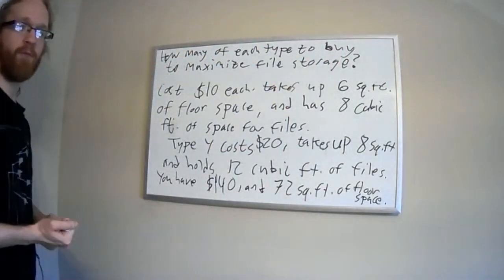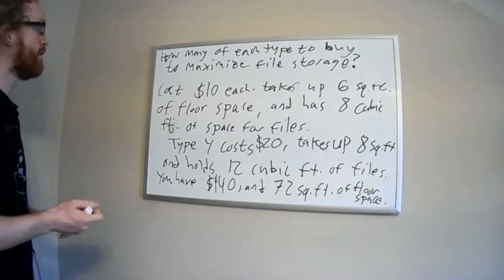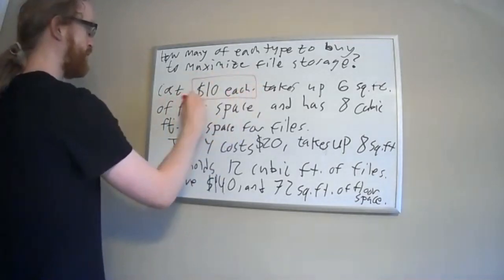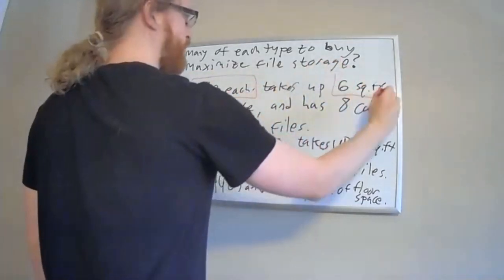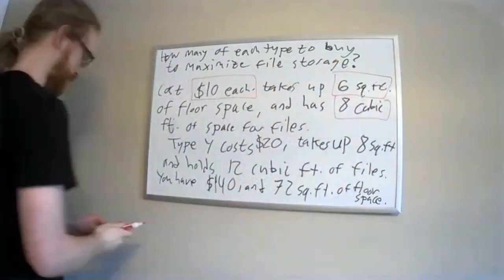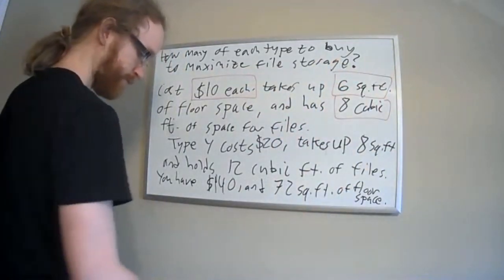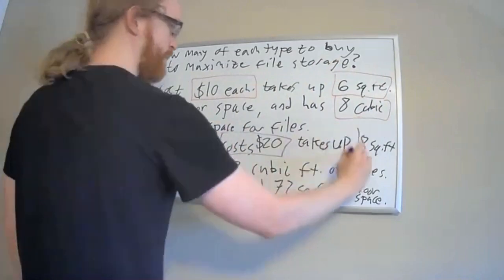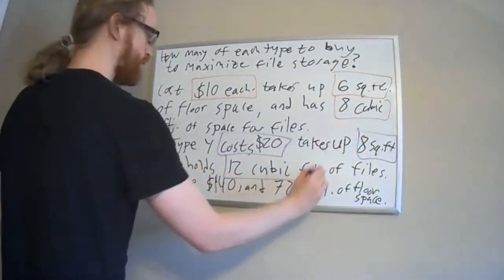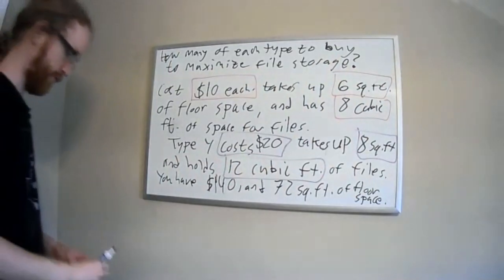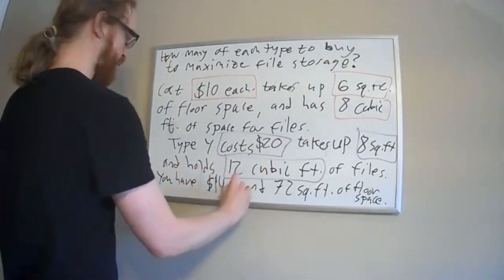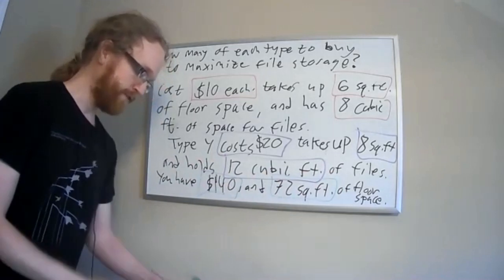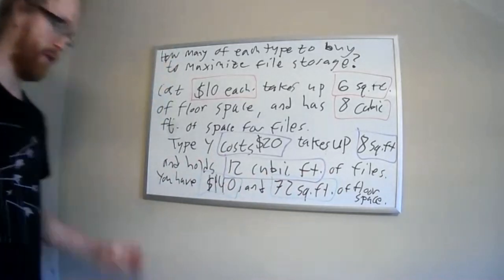The money and floor space limits are going to give us our constraints, putting a limit on how many cabinets we can buy. The relevant information is: type x costs ten dollars, takes up six square feet, and holds eight cubic feet. Type y costs twenty dollars, takes up eight square feet, and holds twelve cubic feet. We only have 140 dollars and 72 square feet of floor space available — these are things to keep in mind when doing linear programming problems.